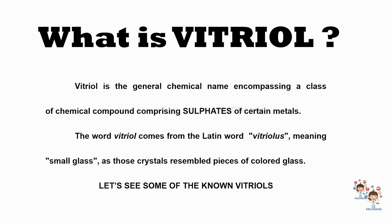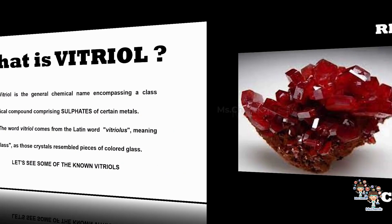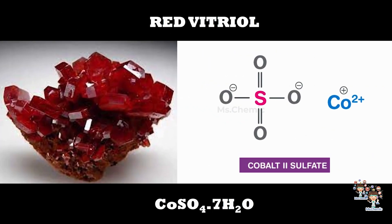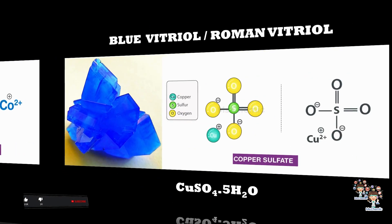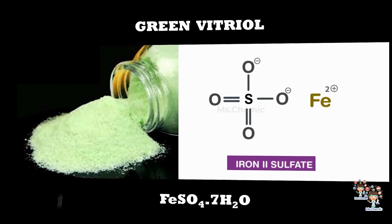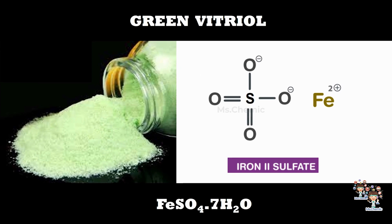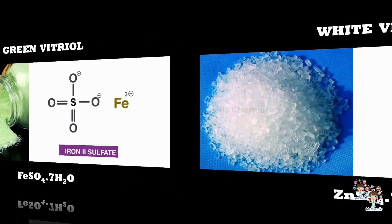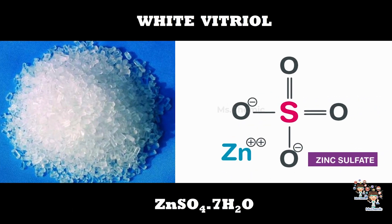Let's see some of the known vitriols. Red vitriol: cobalt sulfate heptahydrate. Blue vitriol, or roman vitriol: copper sulfate pentahydrate. Green vitriol: ferrous sulfate heptahydrate. White vitriol: zinc sulfate heptahydrate.